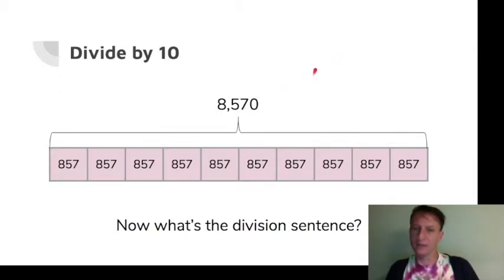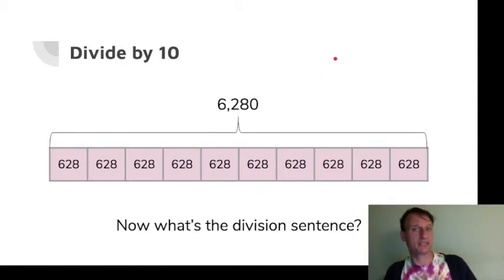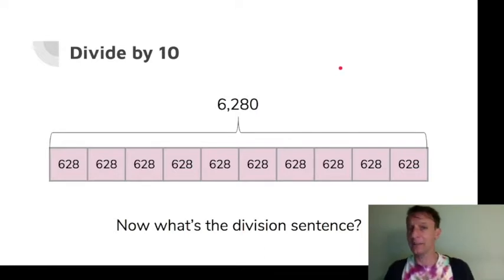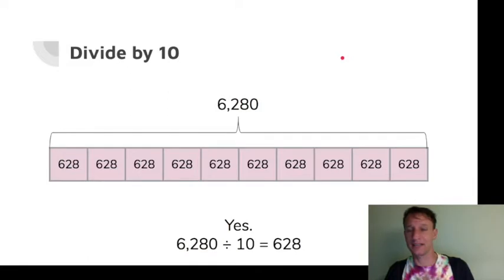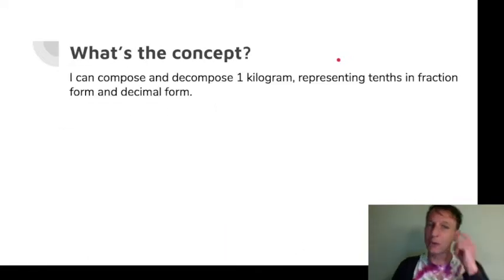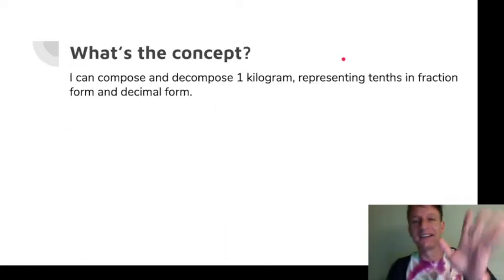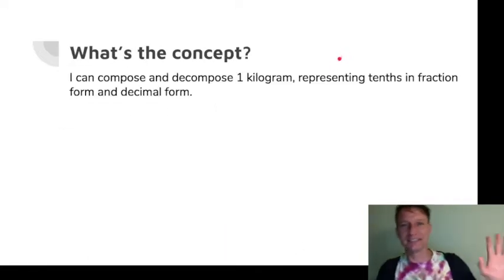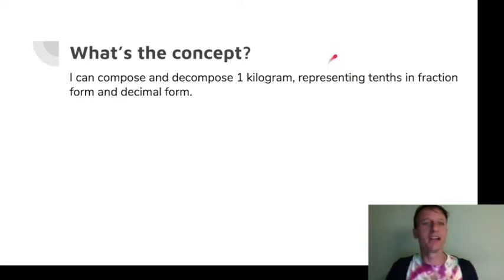8570 divided into 10 parts is 857. And 6280 divided by 10 is 628. You see how this works — it's beautiful! Now that that's easy, let's do something else.